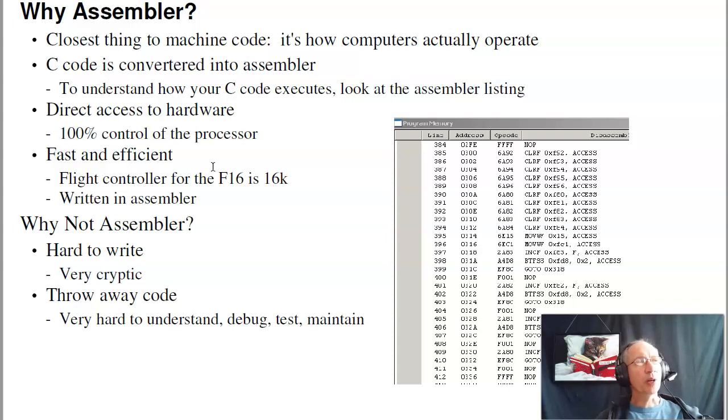The problem with Assembler is it's very hard to write. It's very cryptic. And it's what I call throwaway code. If you take somebody else's Assembler, usually the easiest thing to do is pitch it and start over. In industry, maintainability, reusability, testability is all important. So typically you avoid Assembler if at all possible. Sometimes it's not possible. If I really need fast efficient code, then I'll just bear down and actually write in Assembler.